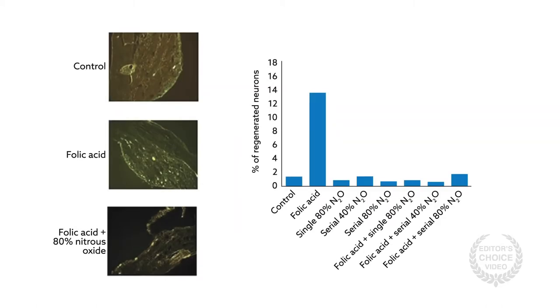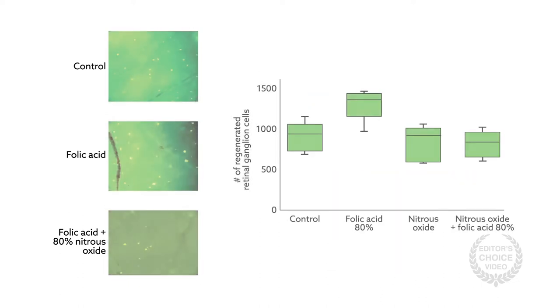Similar results were found in vivo after a sharp spinal cord injury. Here, a higher percentage of neurons regenerated with folic acid, but the effect was blocked in animals receiving nitrous oxide. The finding was also replicated with a sharp optic nerve injury.